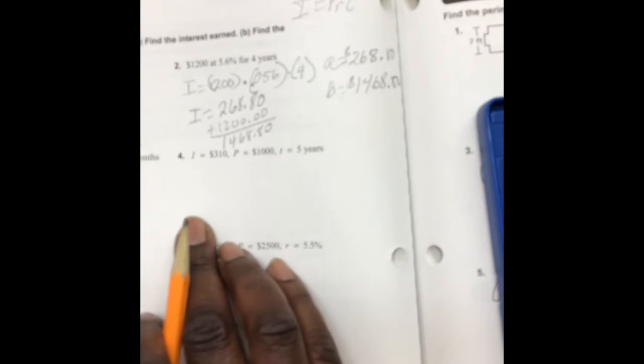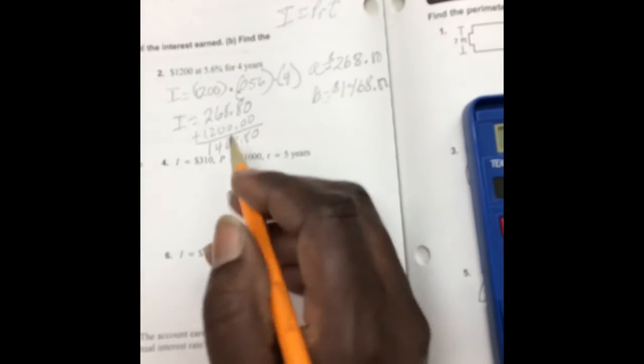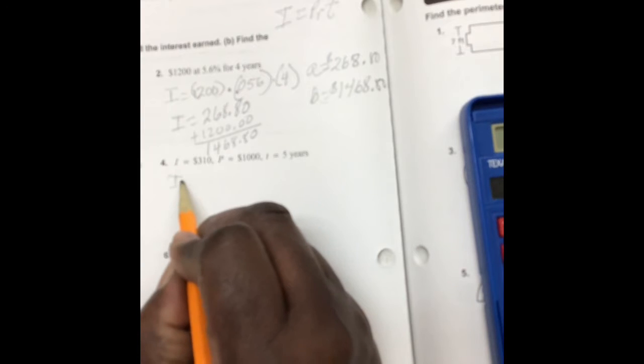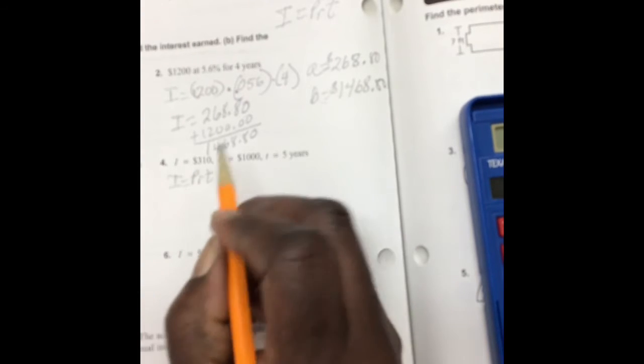Number four says find the annual simple rate. Once again, here's our formula.